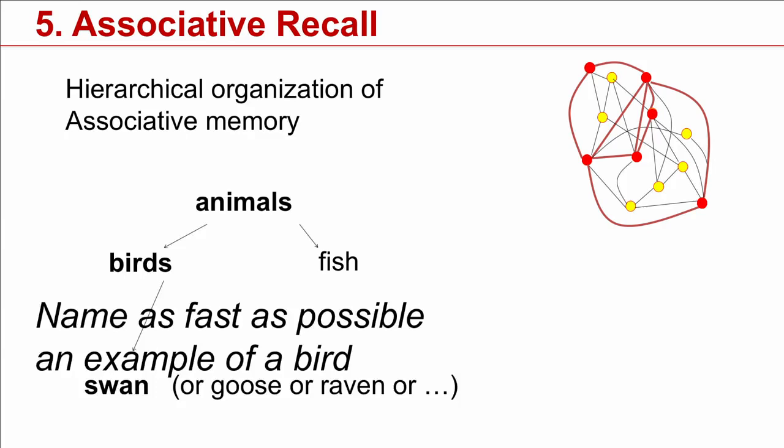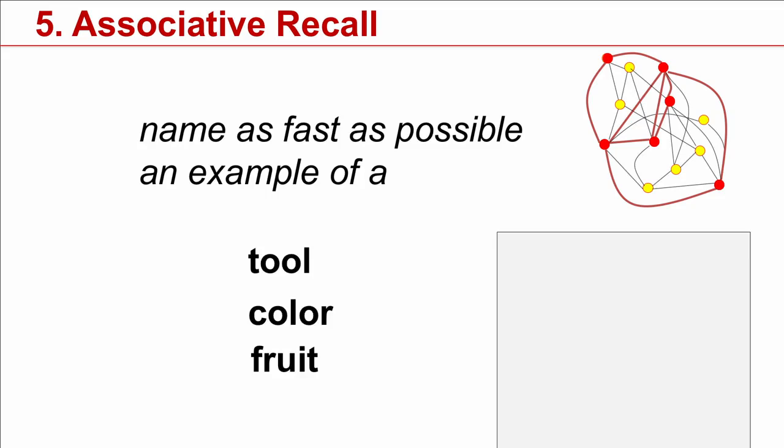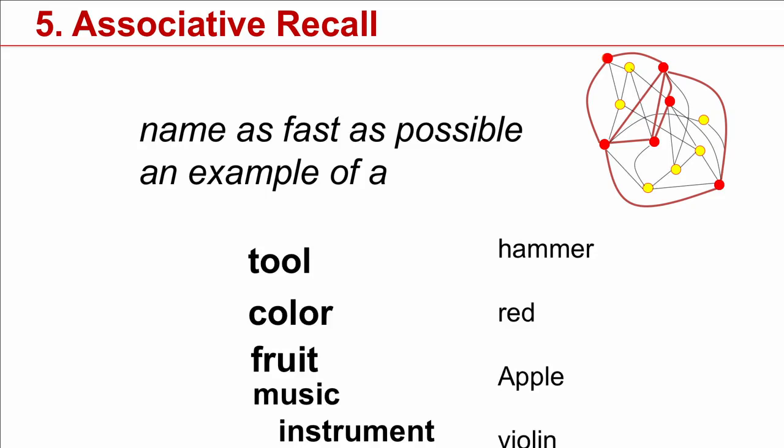Now, again, I would like you to speak out loud what you think first, or write down the first letter on a piece of paper. But if you're alone in a room, just speak out loud what you think of first. Here is what I want you to do: give me as fast as possible an example of a tool, an example of a color, an example of a fruit, an example of a music instrument.